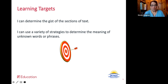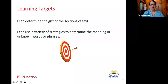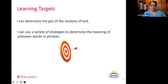The second learning target is: I can use a variety of strategies to determine the meaning of unknown words and phrases. In this particular article, there's a lot of vocabulary that is going to be new. It's about the brain, so that's going to be some scientific vocabulary, new words, and also some multi-syllabic words where we could look at prefixes and suffixes and break the word parts away from each other in order to determine what it means. Those are our learning targets today.